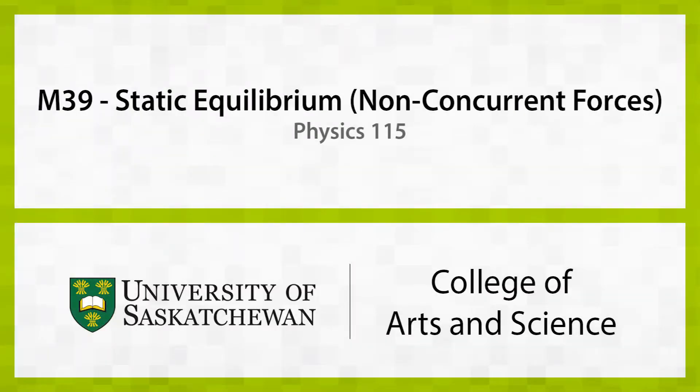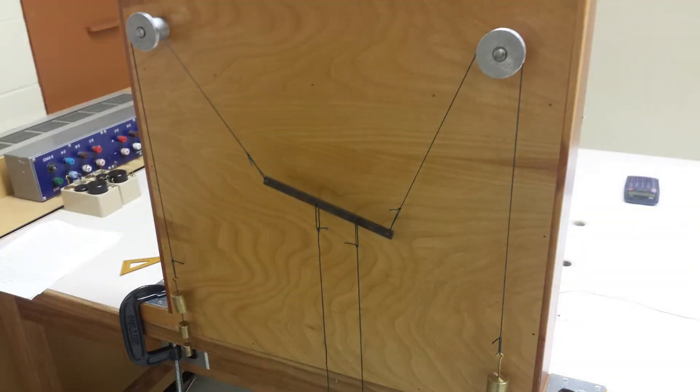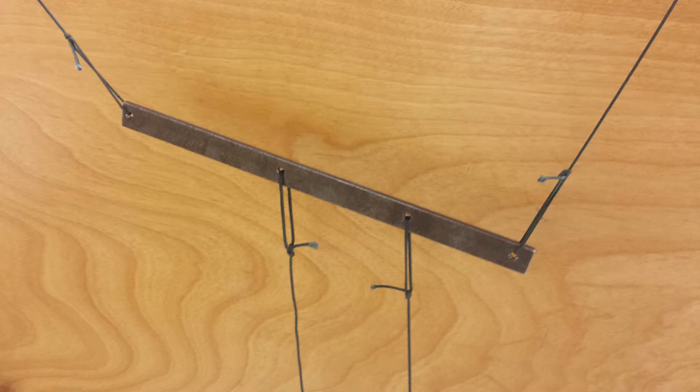The purpose of this experiment is to examine the conditions that apply to a rigid body in static equilibrium. This object is a small metal bar. Three different masses are used to produce three forces on the bar. As you can see, the equipment used in this experiment is very similar to that used in lab M3. The only difference is that in this lab, the object being examined has size.